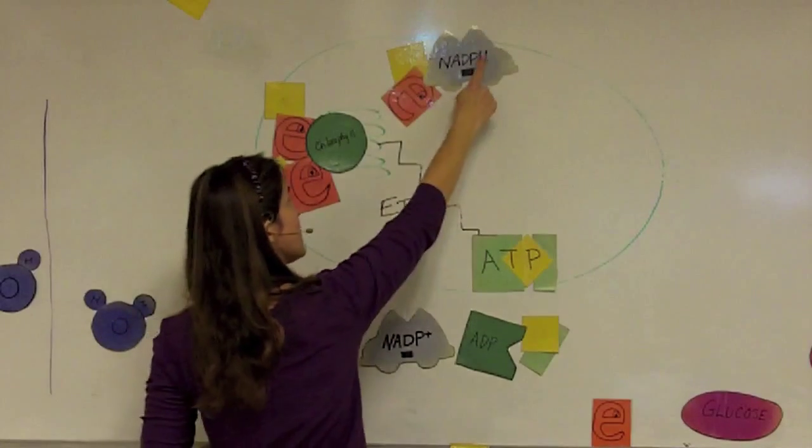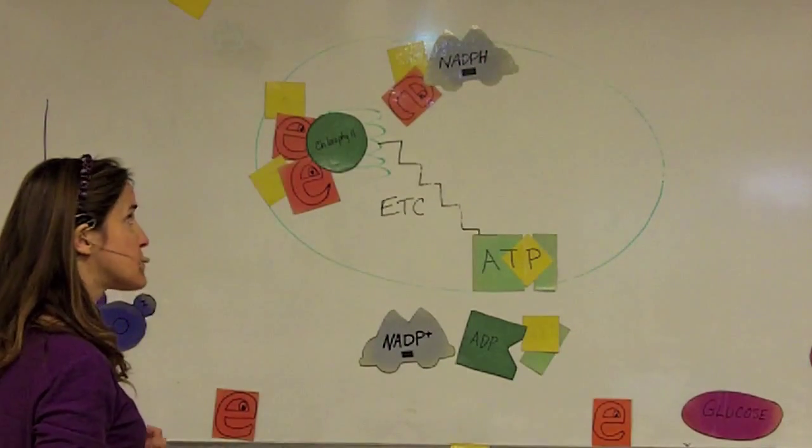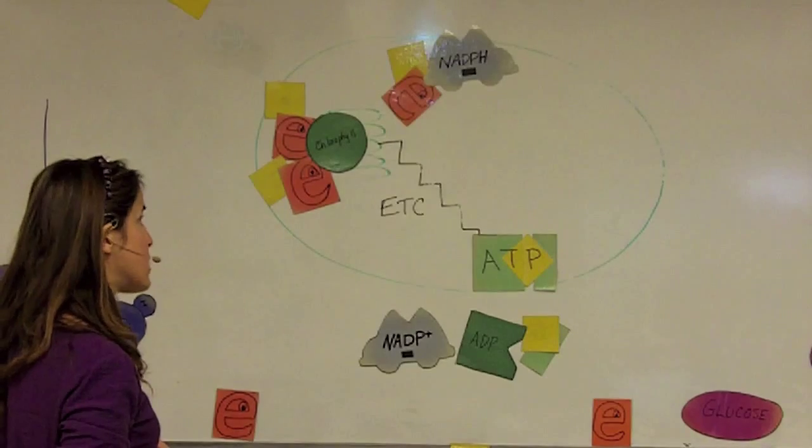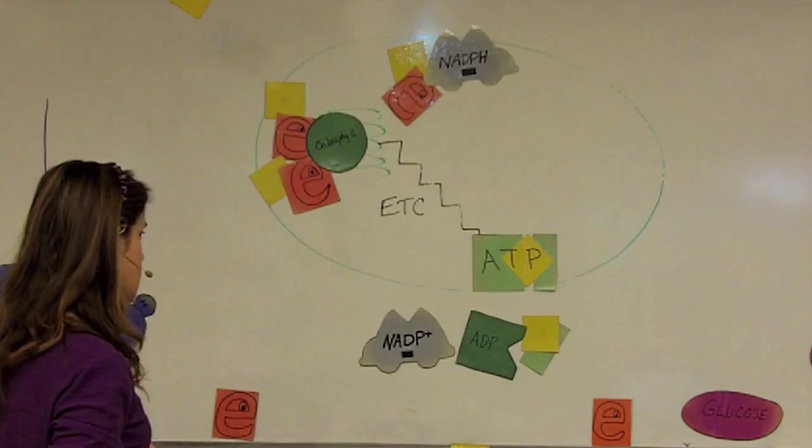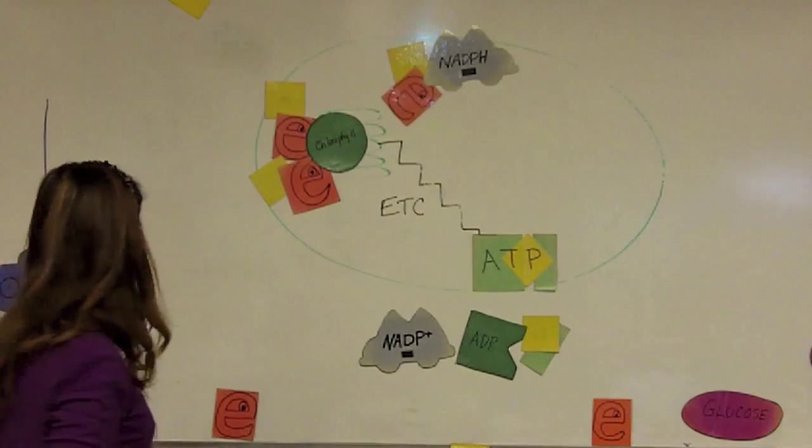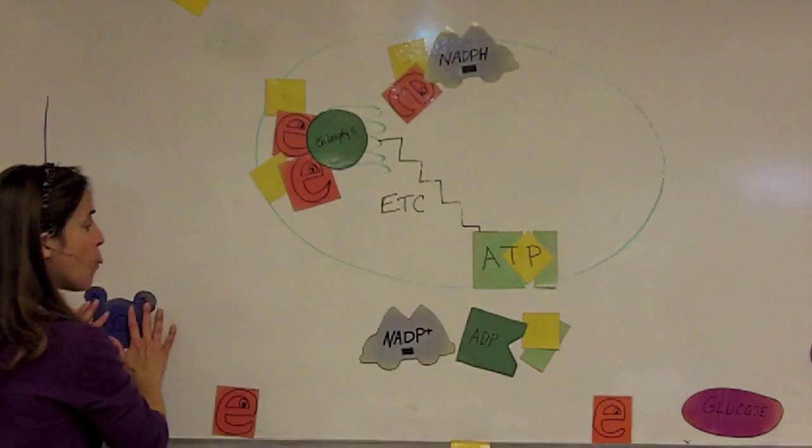And I need a source of hydrogen for my carrier, NADP+, so that it can be converted and charged up into NADPH. So the way that the cells get hydrogen and electrons is from water.